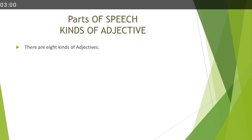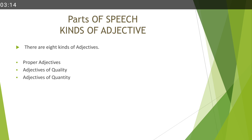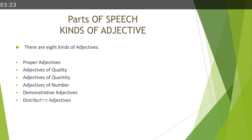After that, there are eight kinds of adjectives. We will discuss each kind one by one. First, we will discuss proper adjectives. After that, adjectives of quantity, then adjectives of number, demonstrative adjectives, distributive adjectives, interrogative adjectives, and possessive adjectives. We will discuss all eight kinds one by one in the next session.